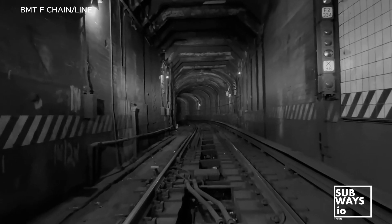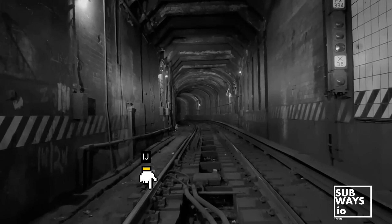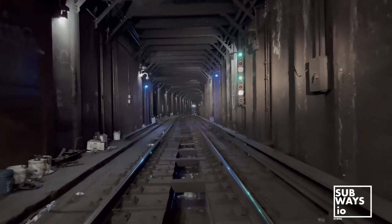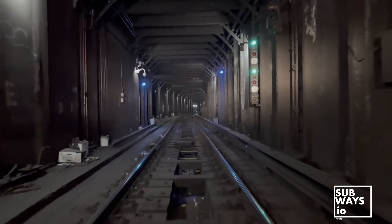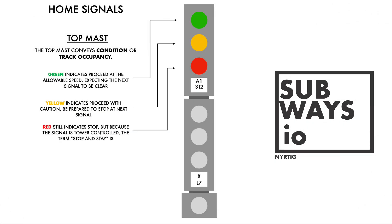A home signal can never be keyed by — we'll cover the key-by function in a future video. A standard home signal consists of two masts. The top mast indicates the condition or track occupancy of the track ahead: top green indicates proceed at the allowable speed anticipating the next signal to be clear; top yellow indicates proceed with caution and be prepared to stop at the next signal; top red means stop. Since the signal is tower-controlled, this is referred to as stop and stay.